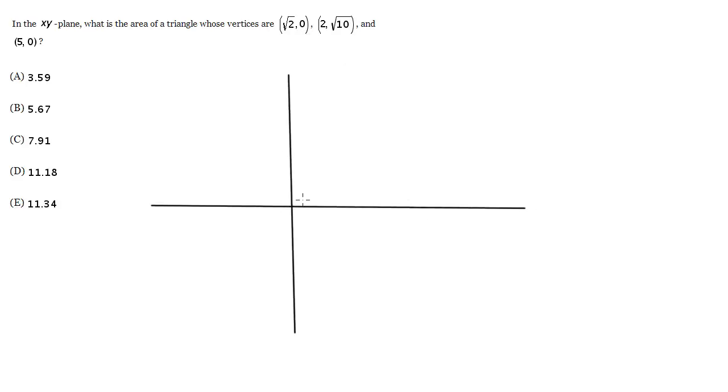First point is square root of 2, 0. So here's 1, here's 2. Square root of 2 is like 1.4, so we'll put that point right here and label it √2, 0. Next, 2 square root of 10—so 2, 1, 2, 3, 4, 5. The square root of 10 is a little bit more than 3, so put that right here.